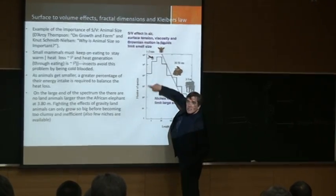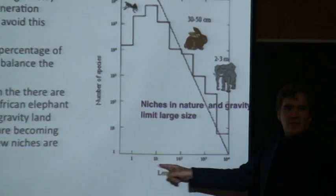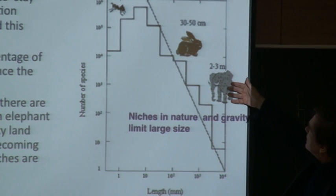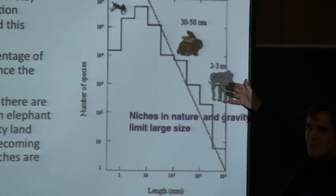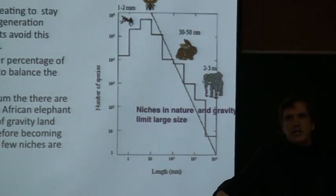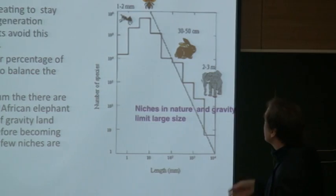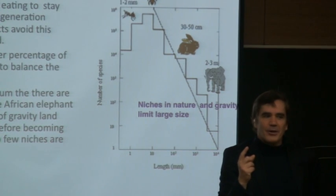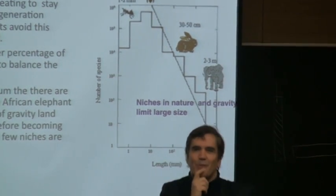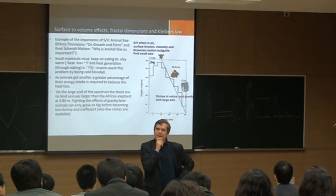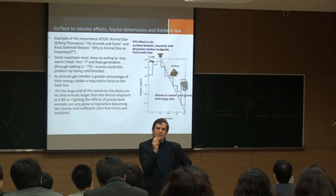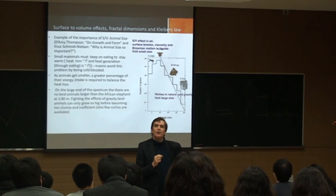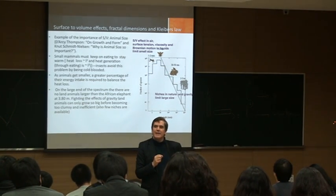If I plot number of species on one axis and size of species on the other: for very large animals like elephants, there are not too many — there aren't many niches in nature where an elephant can hide. Whereas insects can go anywhere, so there are so many niches. But an insect is smaller than a mammal — doesn't it need to eat all the time? What does nature do when it wants to make very small animals? Insects are cold-blooded. That's one of the answers nature has found.